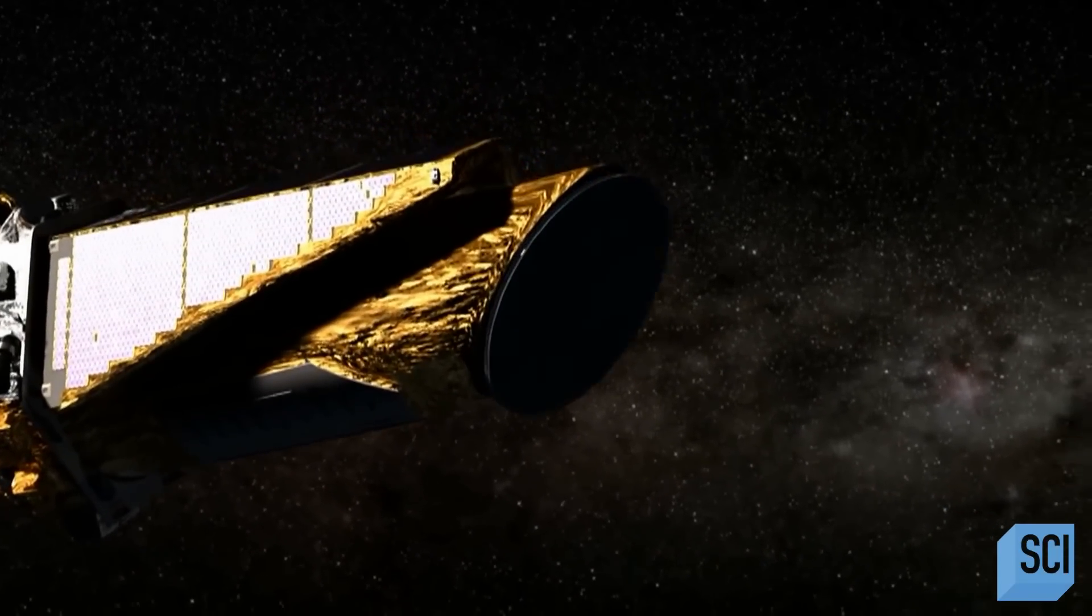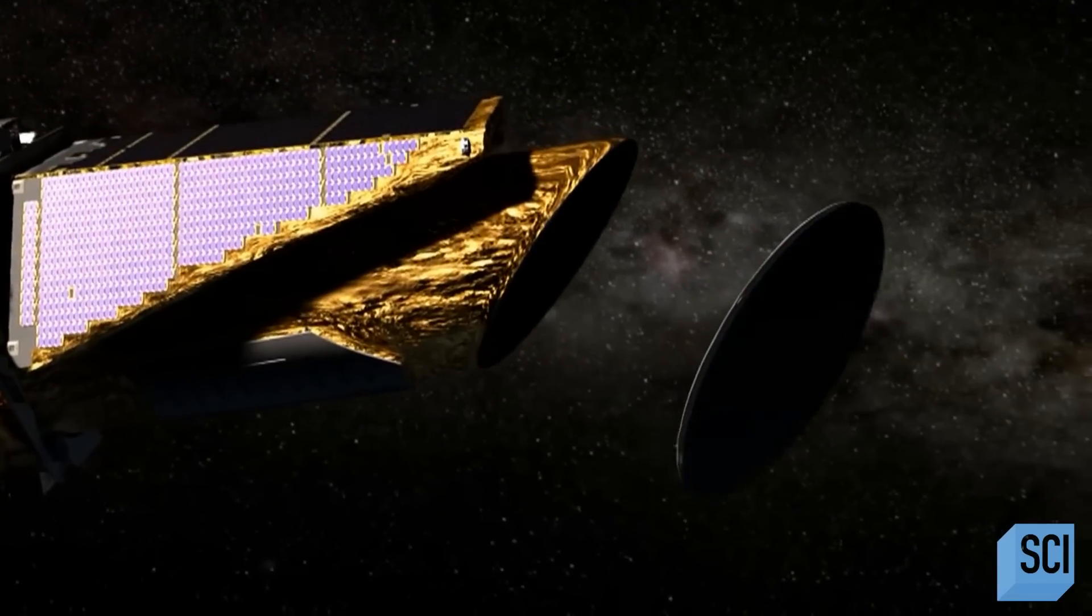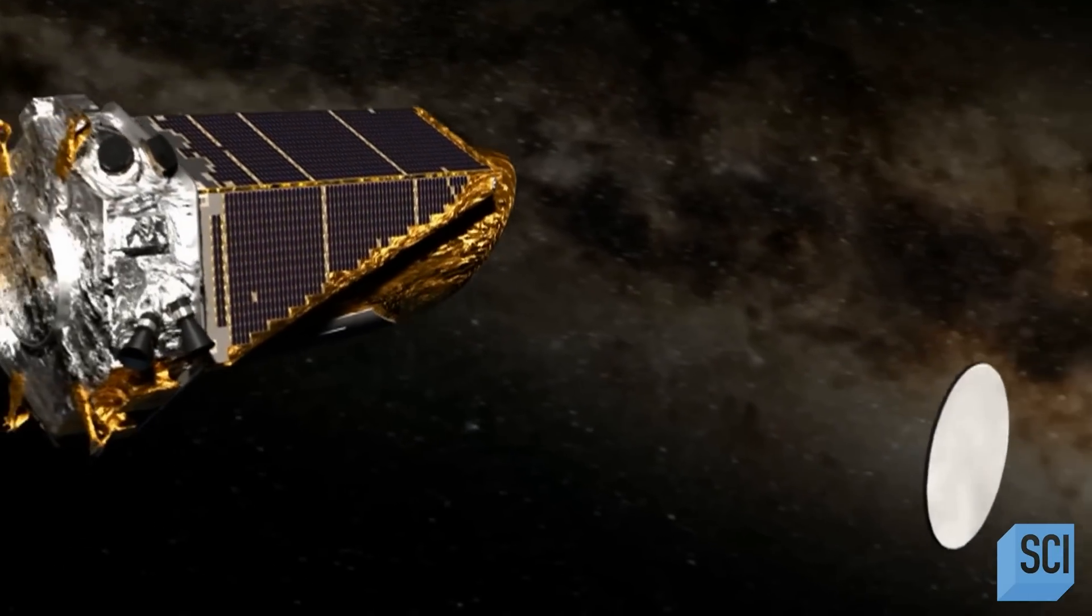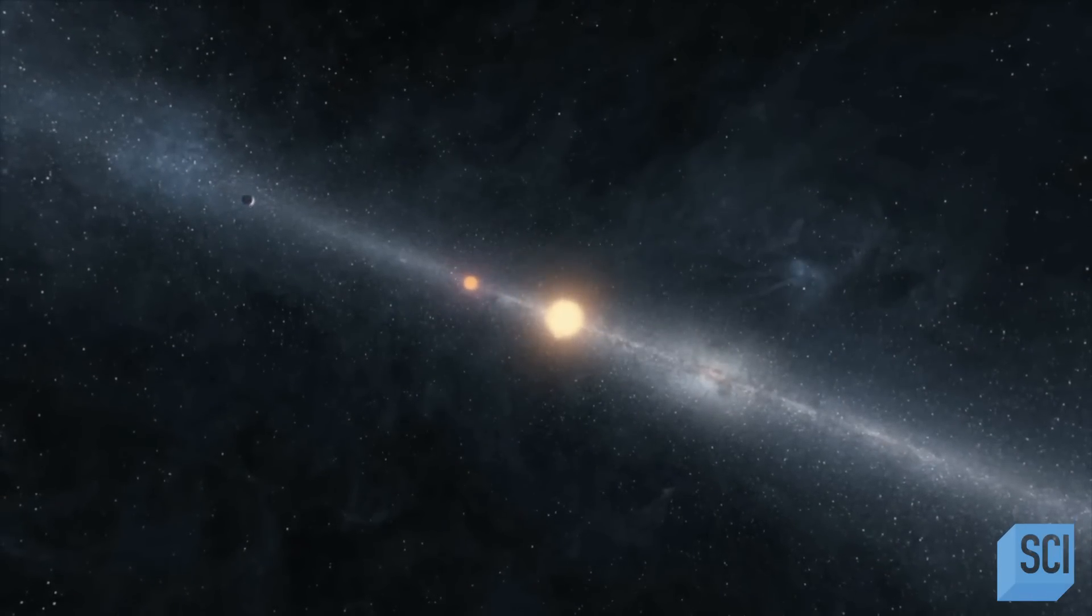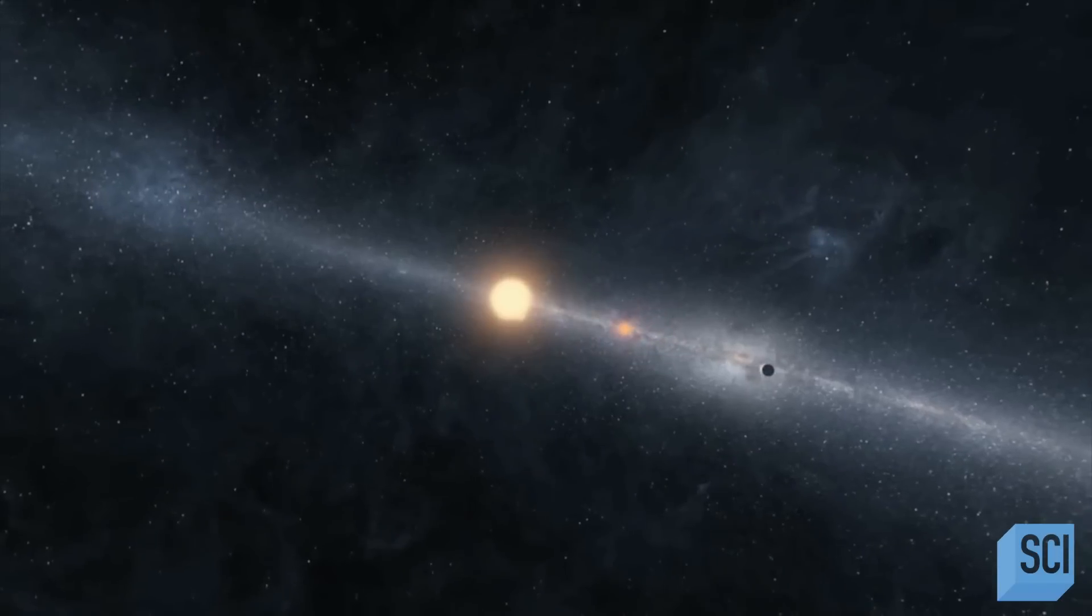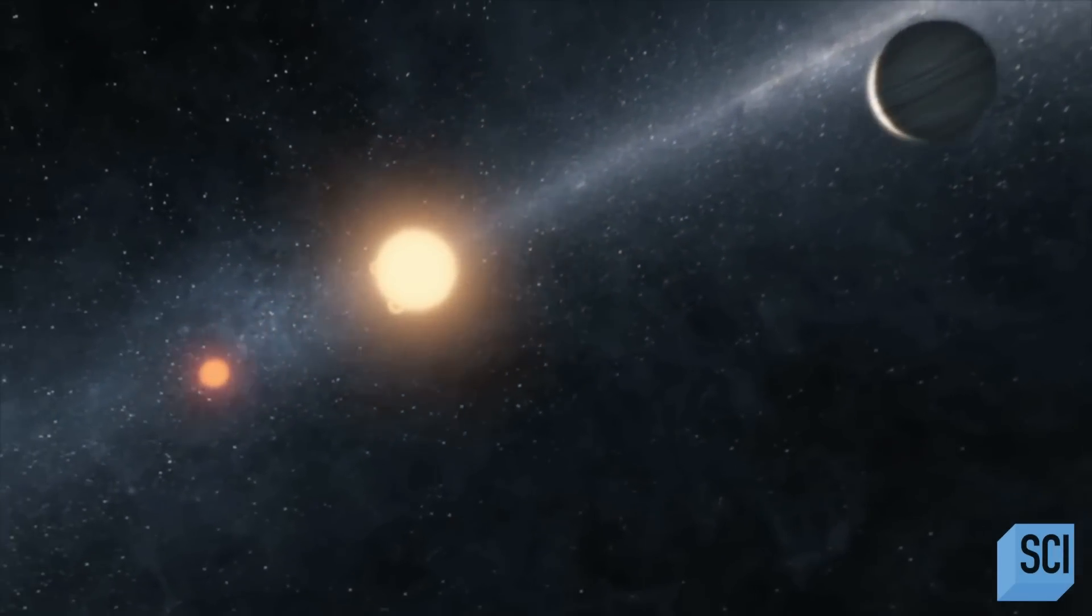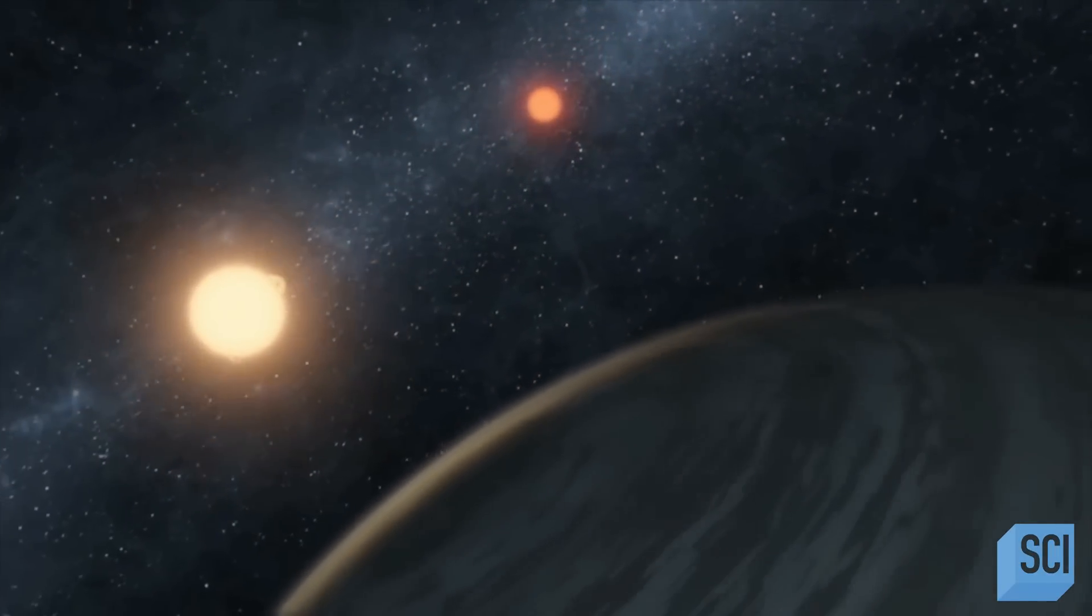But Kepler has discovered for us not only the existence of Earth-like planets, but also has provided amazing data about the universe, such as the confirmation of the existence of planets that orbit around not only one, but two stars, like Kepler-16b. This planet was Kepler's first discovery of a planet that orbits two stars, what is known as a circumbinary planet.